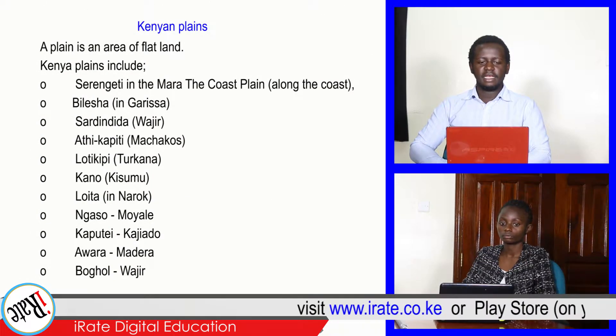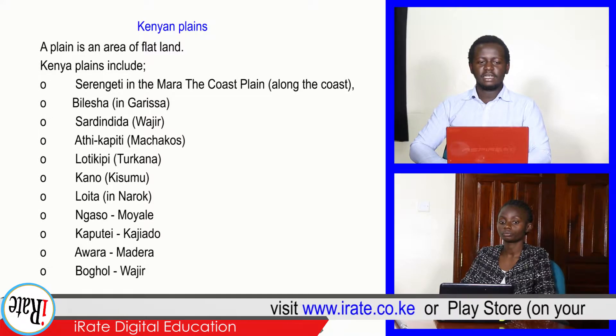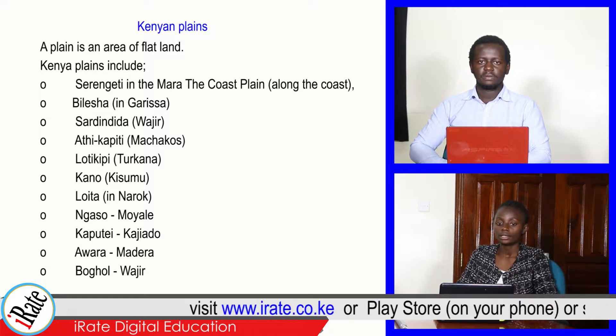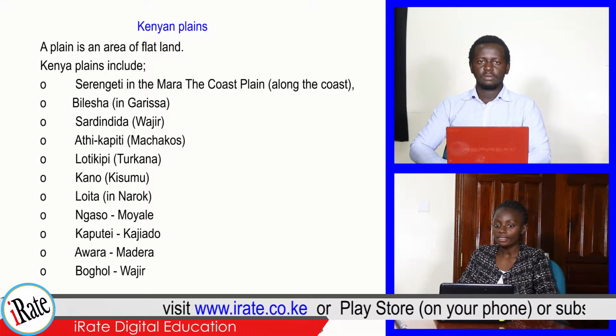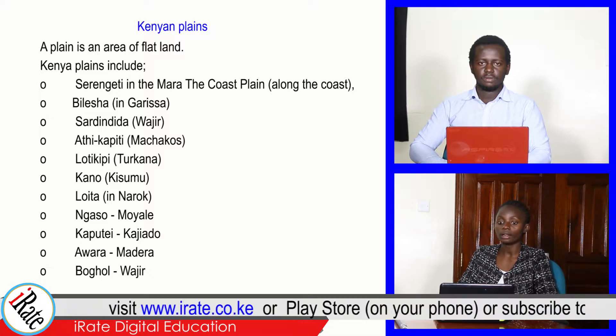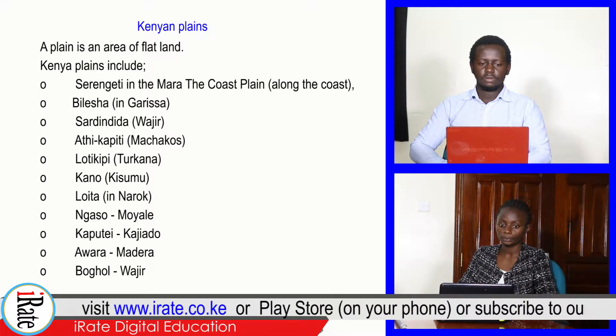A plane is an area of flat land. Kenya's plains include Serengeti in the Mara, and the coast plain along the coast.